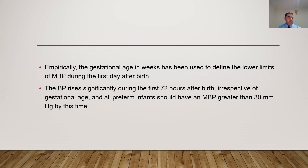Empirically — and this is a very common practical point — the gestational age in weeks has been used to define the lower limits of mean blood pressure during the first day after birth. Importantly, blood pressure rises significantly during the first 72 hours of life irrespective of gestational age.